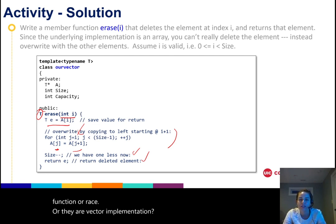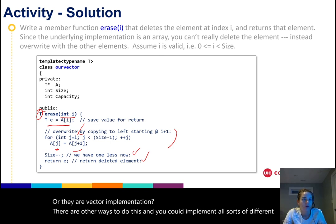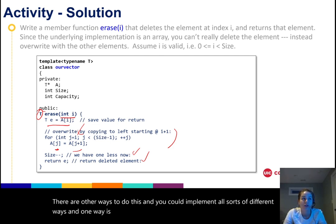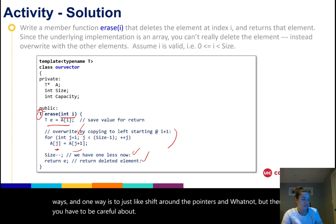There are other ways to do this and you could implement it all sorts of different ways. One way is to just shift around the pointers and whatnot. But then you have to be careful about your buffer that you've created, that C array.